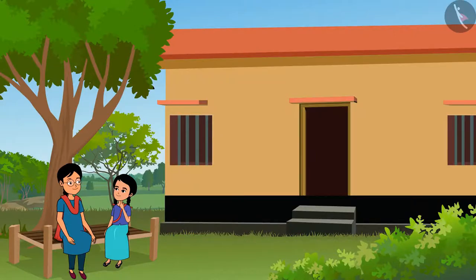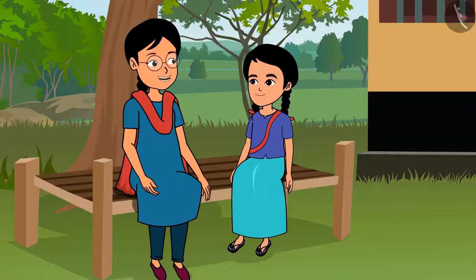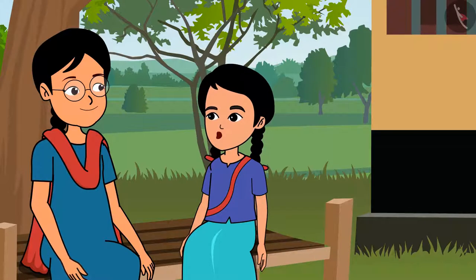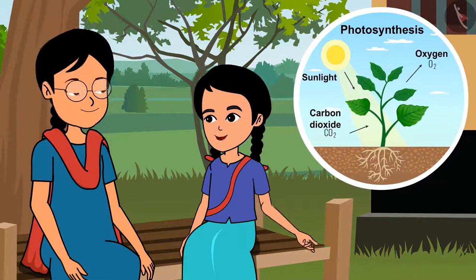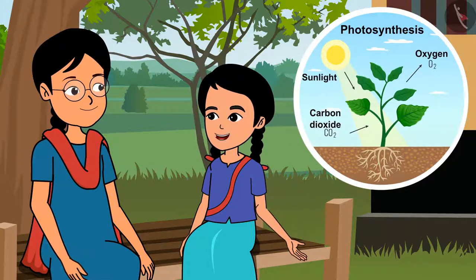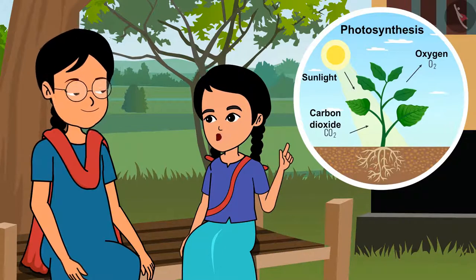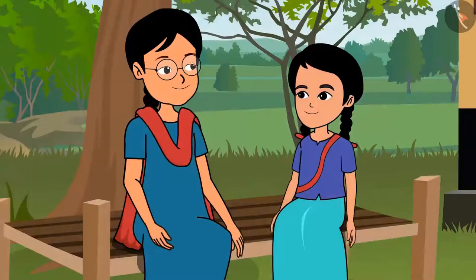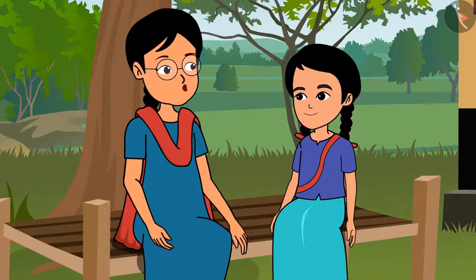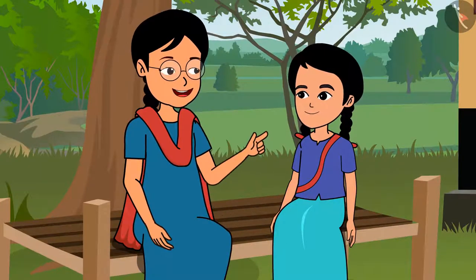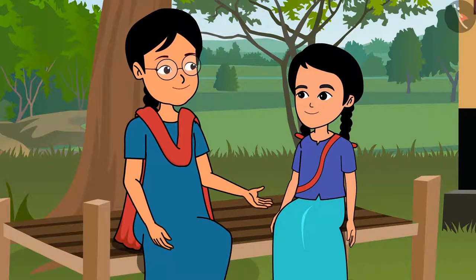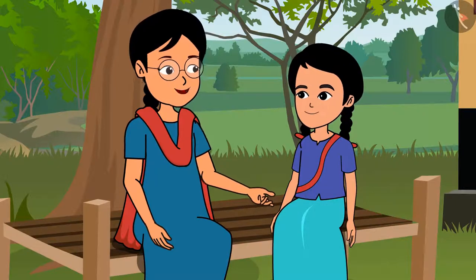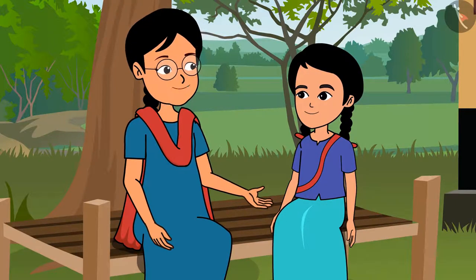Photosynthesis! Correct answer! What is photosynthesis? Plants prepare their own food in the presence of sunlight — they take in carbon dioxide and release oxygen. But the sun is not there during the night, so plants do not perform photosynthesis. But they do breathe.